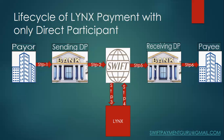All those messages — whether payment-related messages or debit/credit advices — are provided through the SWIFT network. In step five, on receiving the credit advice, the receiving direct participant also receives the customer credit transfer message from SWIFT, which contains all payment information such as the payee details, just like a normal MT103. The receiving direct participant performs its validation and credits the payee's account. This completes the entire life cycle of a LYNX payment in a direct participant scenario.